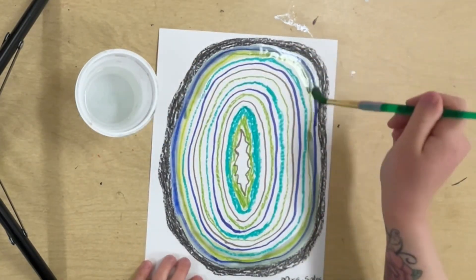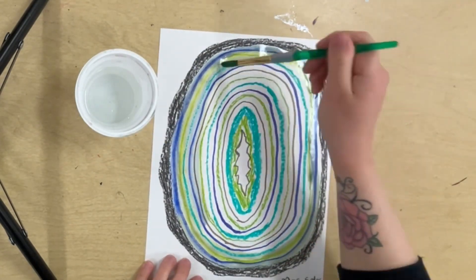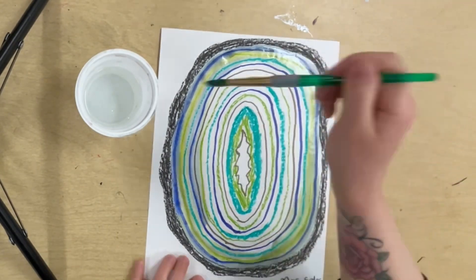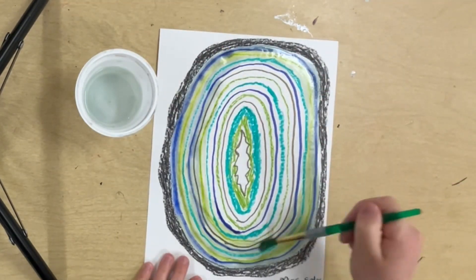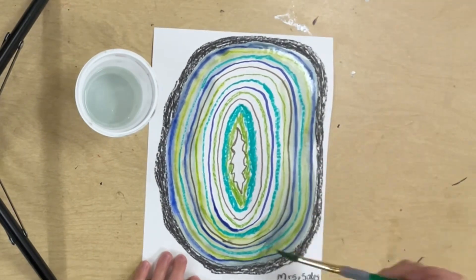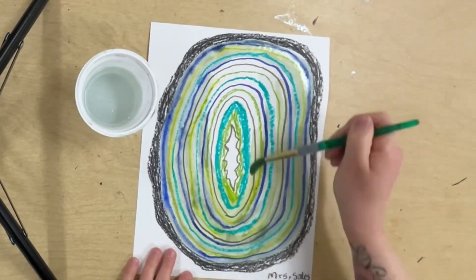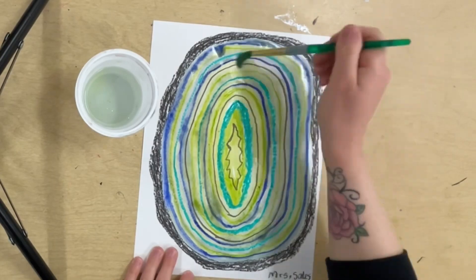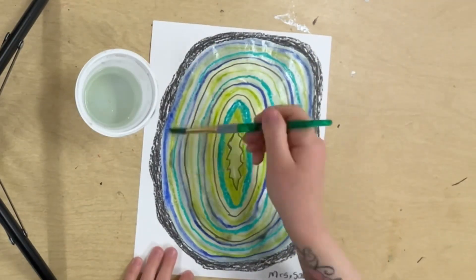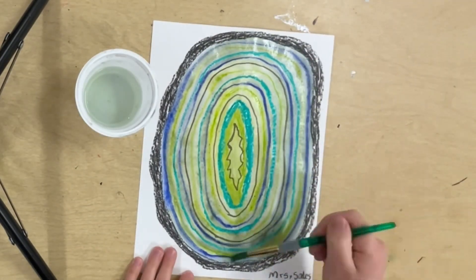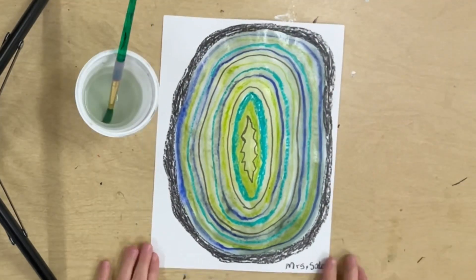And that will just create more color and more color blending, and make the inside of our geode look even more beautiful. When you pick your color scheme, think about colors that will mix well together and not just make a muddy color, so that your geode stays bright and beautiful.